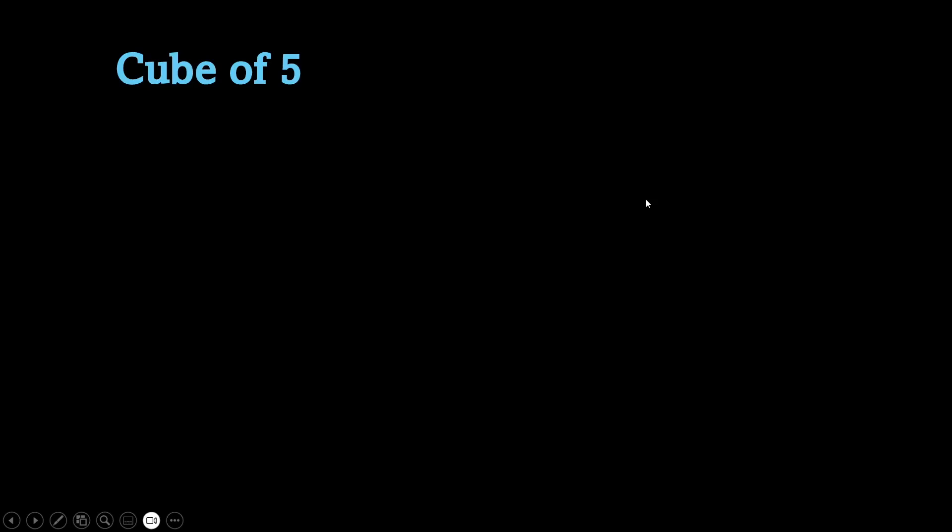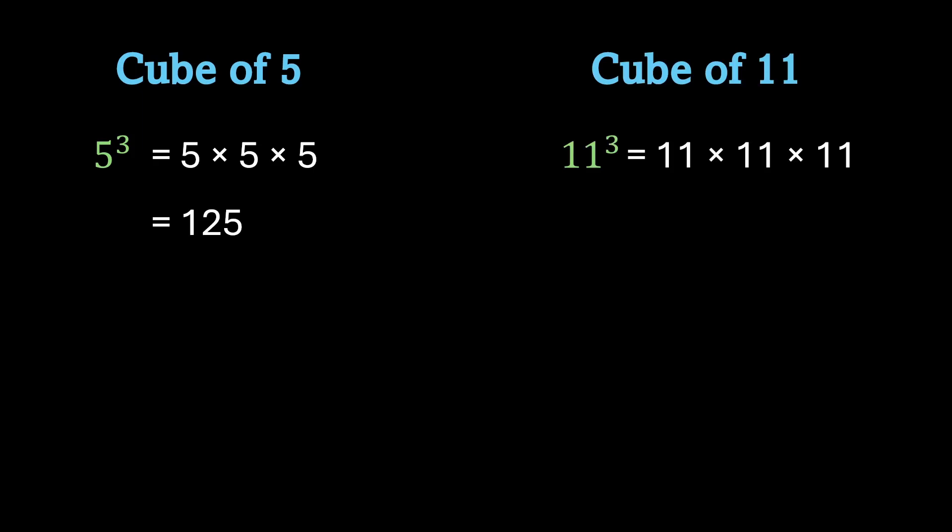Now what would be the cube of 5? We just saw that cube of any number is the number multiplied to itself 3 times. So 5 raised to power 3 would be 5 into 5 into 5, that is 125. Similarly, cube of 11 would be 11 into 11 into 11, which is 1331.